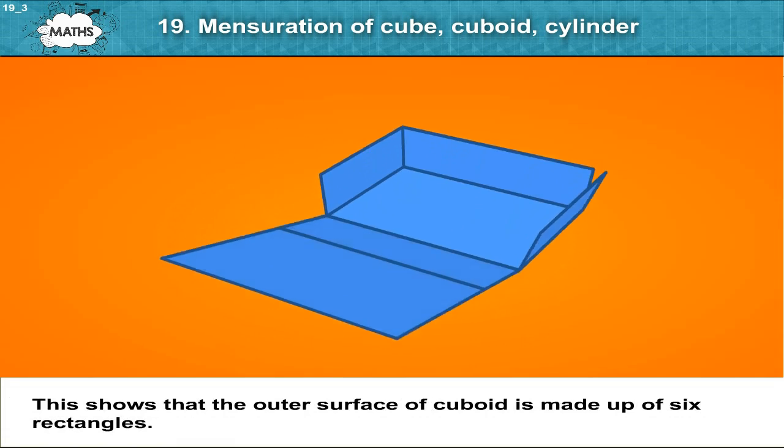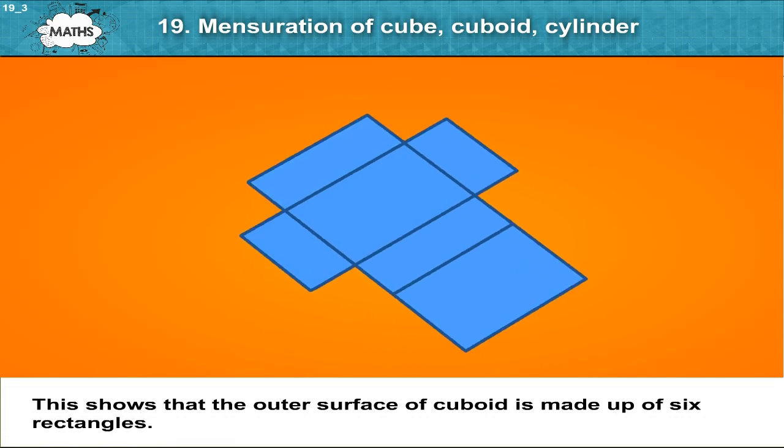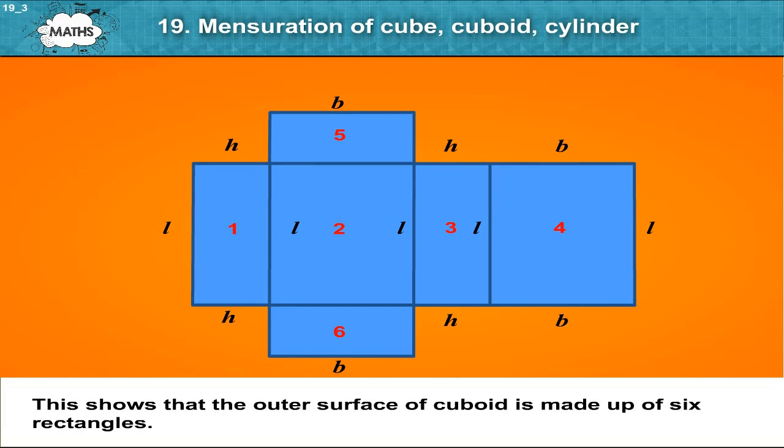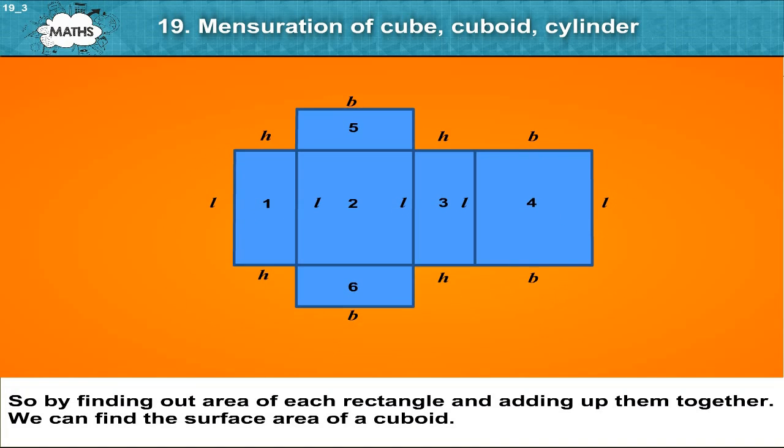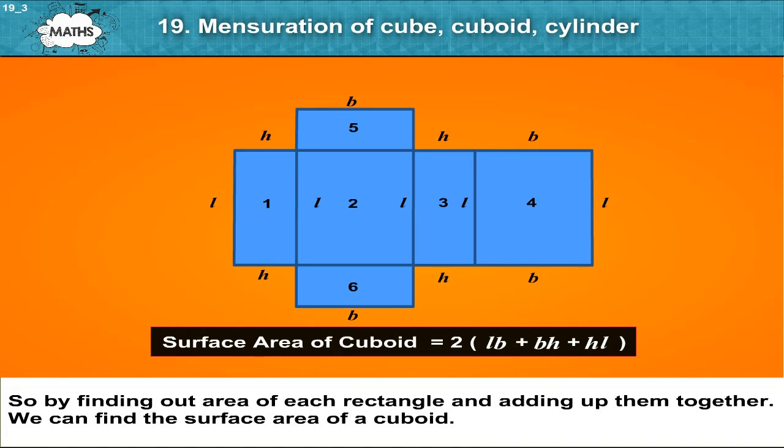This shows that the outer surface of cuboid is made up of six rectangles. So by finding out area of each rectangle and adding them up together, we can find the surface area of a cuboid.